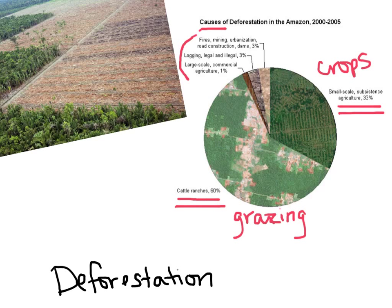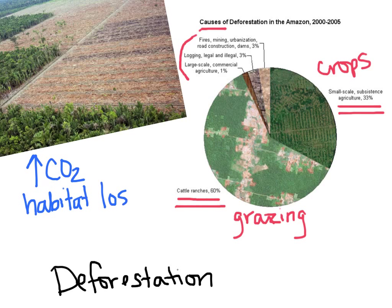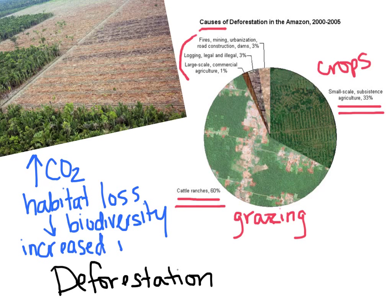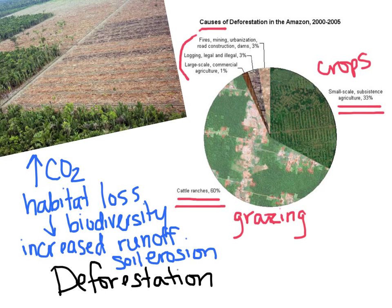The effects of deforestation include increased carbon dioxide and habitat loss, which decreases biodiversity — all of the different species living in an area. It can also cause increased runoff of sediment and chemicals into bodies of water, and we get more soil erosion.